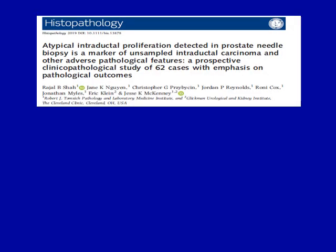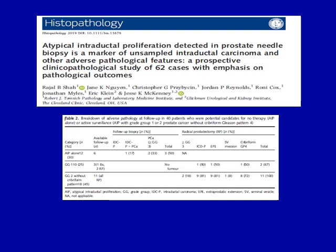We recently undertook an outcome study of this type of lesion in prostate biopsy, with a total of 62 cases. We had a small group of patients with AIP only — atypical intraductal proliferation only — in needle biopsy. Within this group at follow-up, over 50% of patients had significant cancer at repeat biopsy. The next group was patients with AIP with grade group 1 and grade group 2 without cribriform invasive pattern 4. Majority of these patients demonstrated at follow-up intraductal carcinoma or other adverse pathological features defined as either grade group 3 or higher, seminal vesicle invasion, or extraprostatic extension.